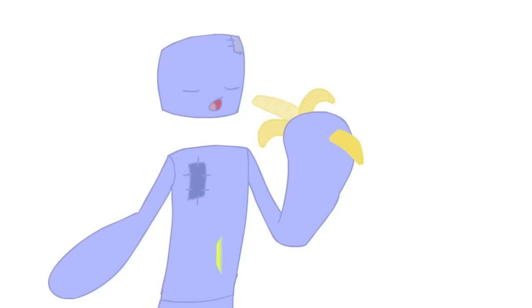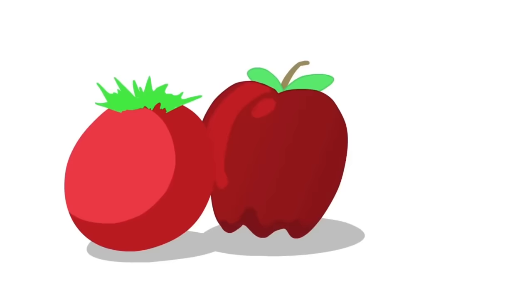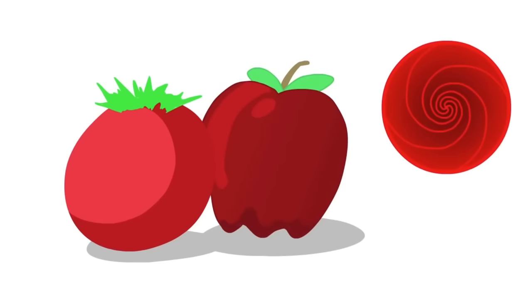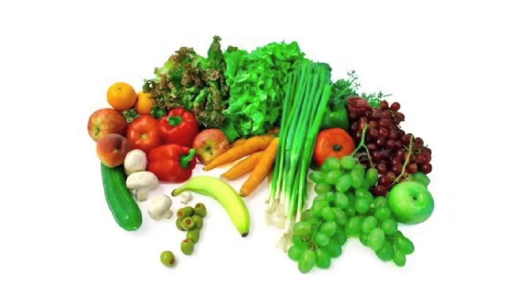Eating food that matches the chakra colors are good as well. Eating red tomatoes and apples are good for the root chakra. Eating greens are good for the heart. Does this make you want to eat healthier?